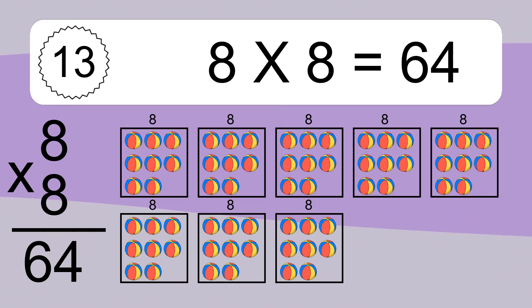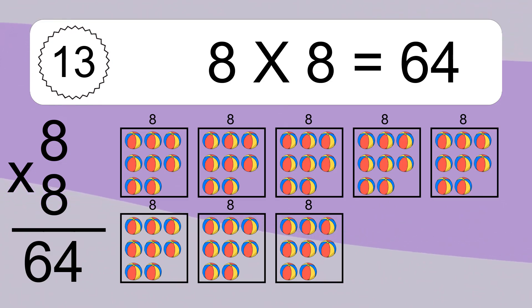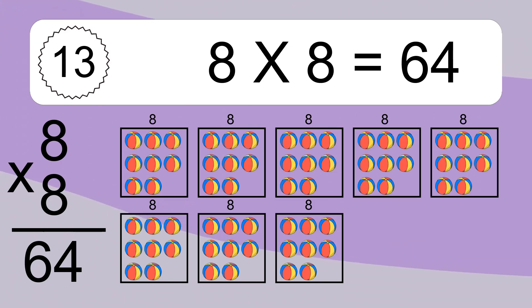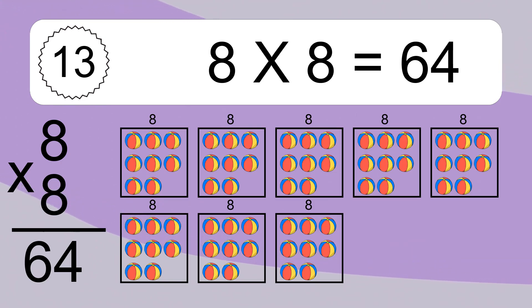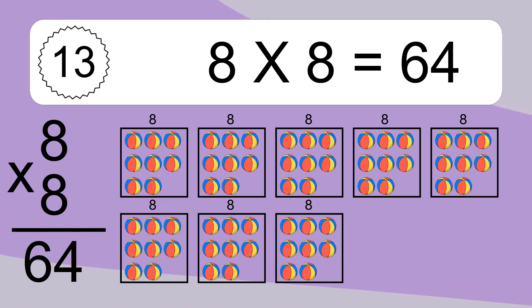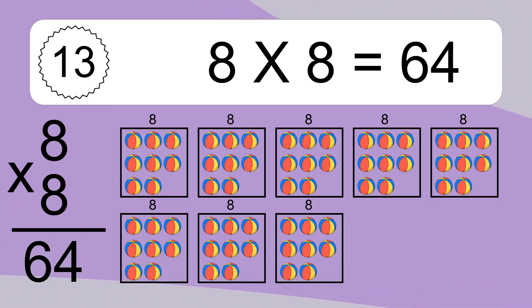Eight times eight equals what? We have eight boxes, and each box has eight colorful balls inside. If you count all the balls in all the boxes together, you will have eight times eight balls. This equals sixty-four balls.